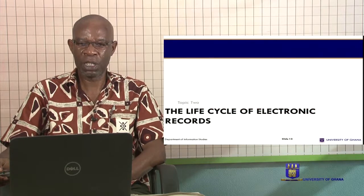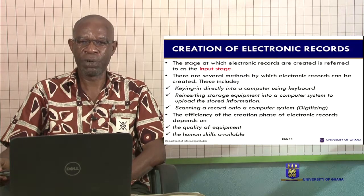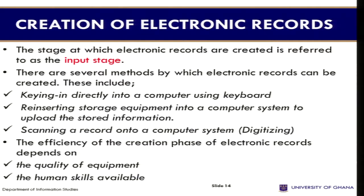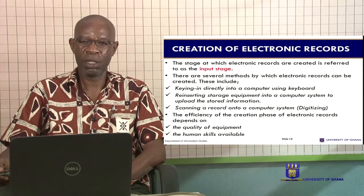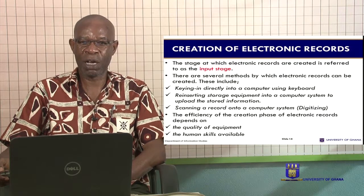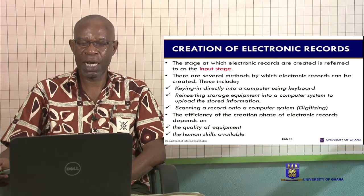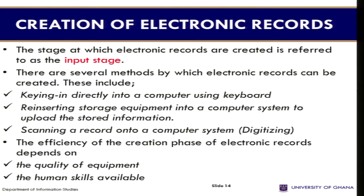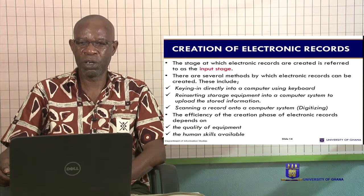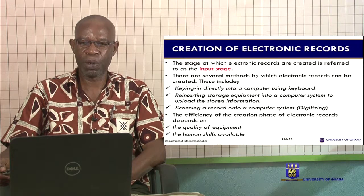The life cycle of electronic records: Just like paper-based records, electronic records also go through virtually the same processes. The creation of electronic records — the stage at which electronic records are created — is referred to as the input stage. There are several methods by which records can be created: keying directly into a computer using a keyboard, reinserting storage equipment into a computer system such as a pen drive or CD, and scanning a record onto a computer system. The efficiency of the creation phase depends on the quality of the equipment and the IT skills of the person creating the record.